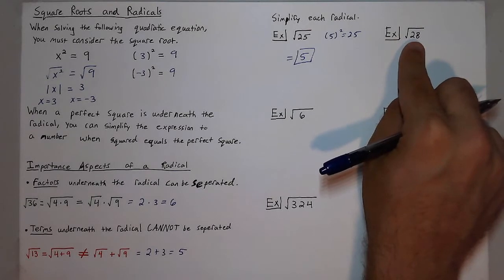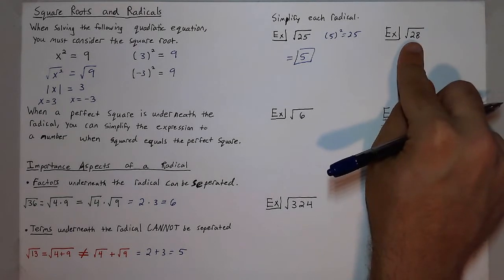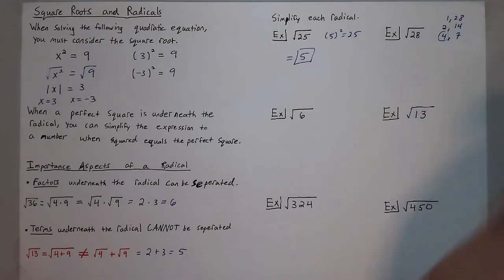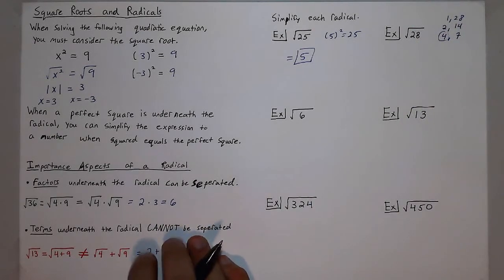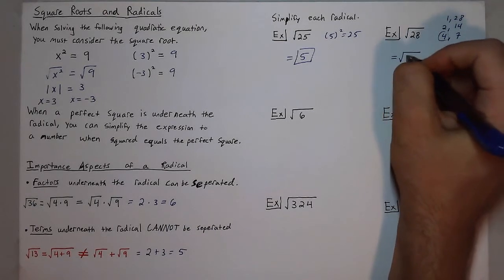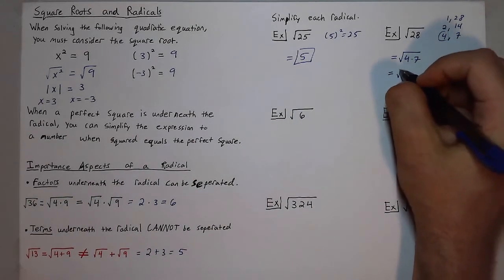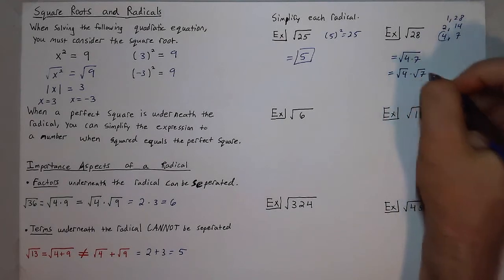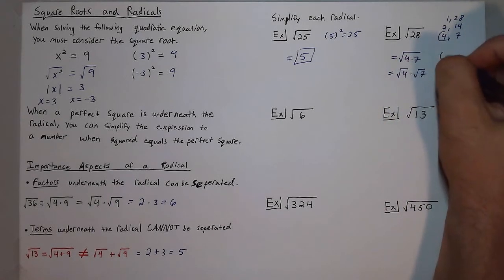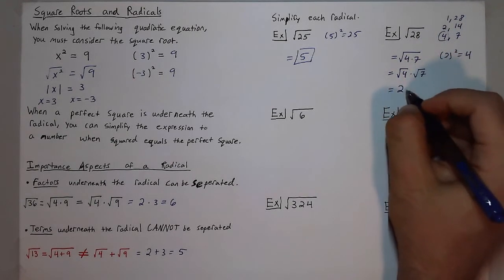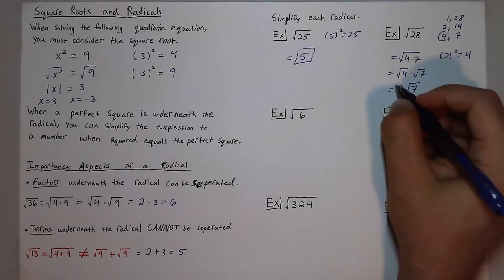28 is not a perfect square, but maybe there's a factor within 28 that is. The factors of 28 are 1 and 28, 2 and 14, and 4 and 7. Since 4 is a perfect square, I can write 28 as 4 times 7, separate the radicals as square root of 4 times square root of 7, giving 2 times square root of 7, or 2√7.